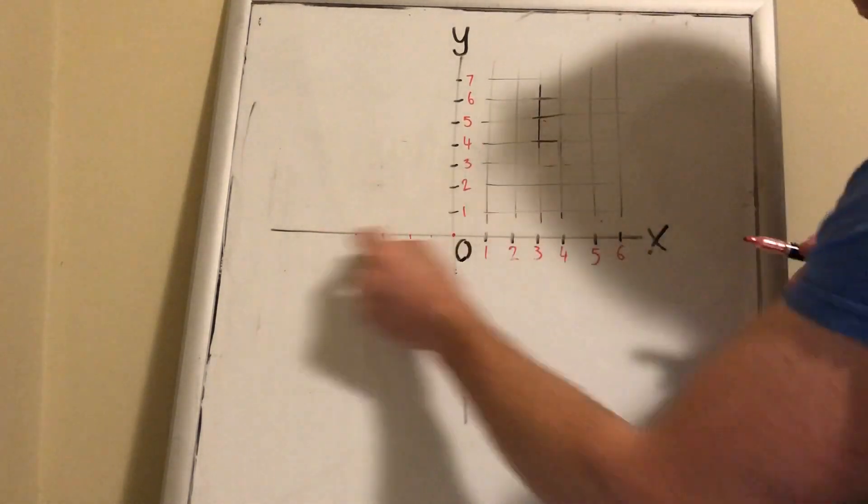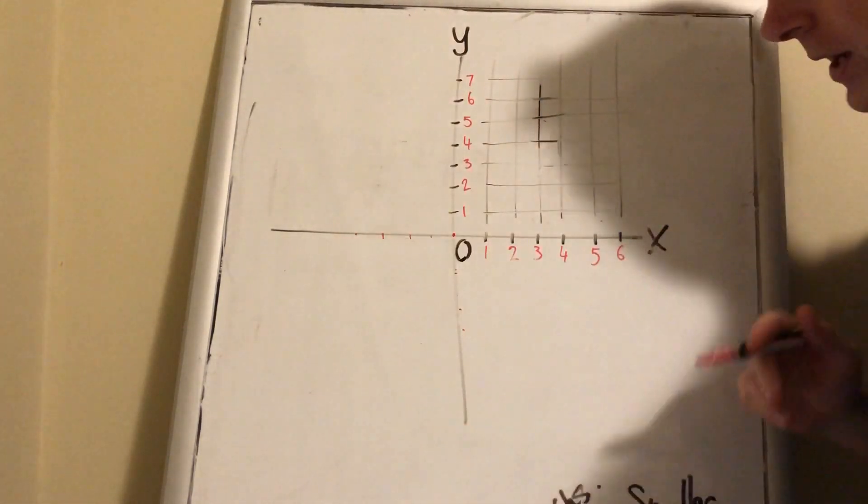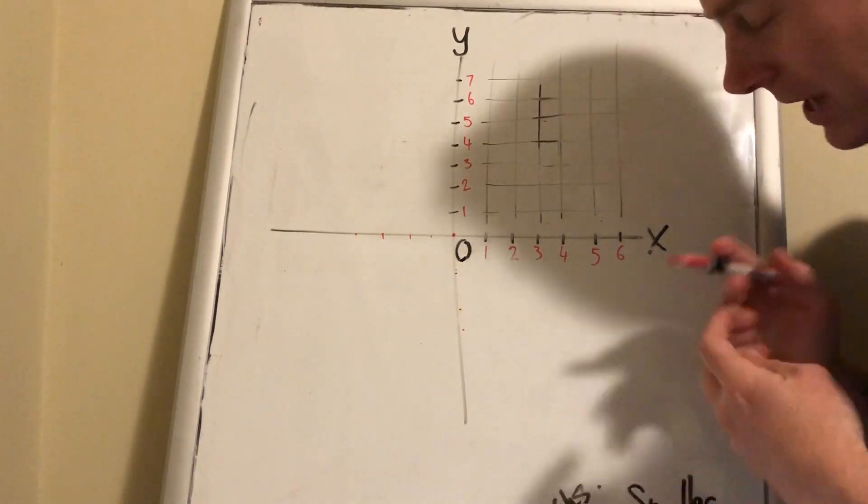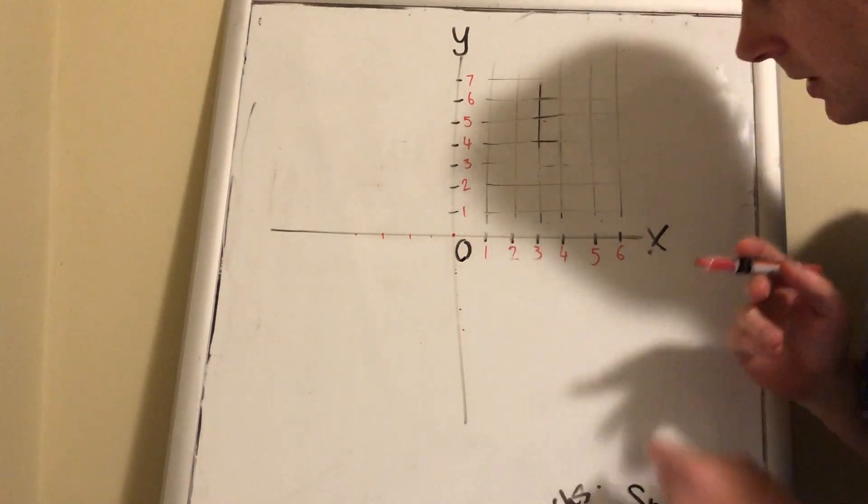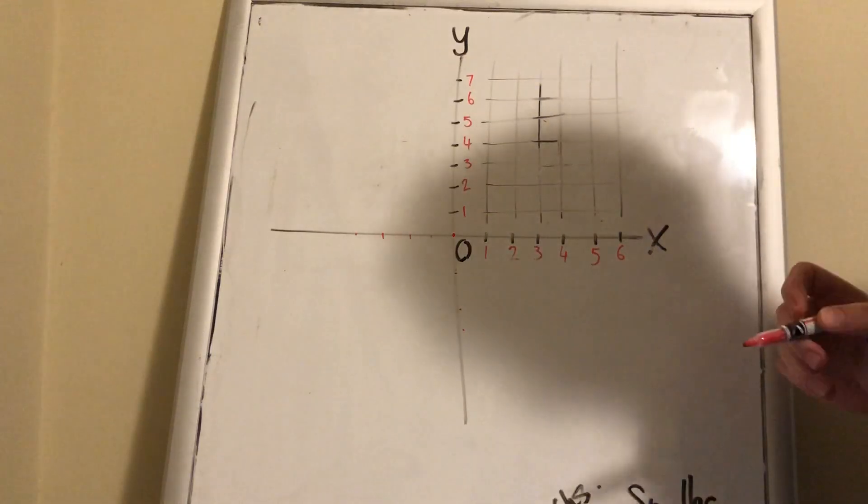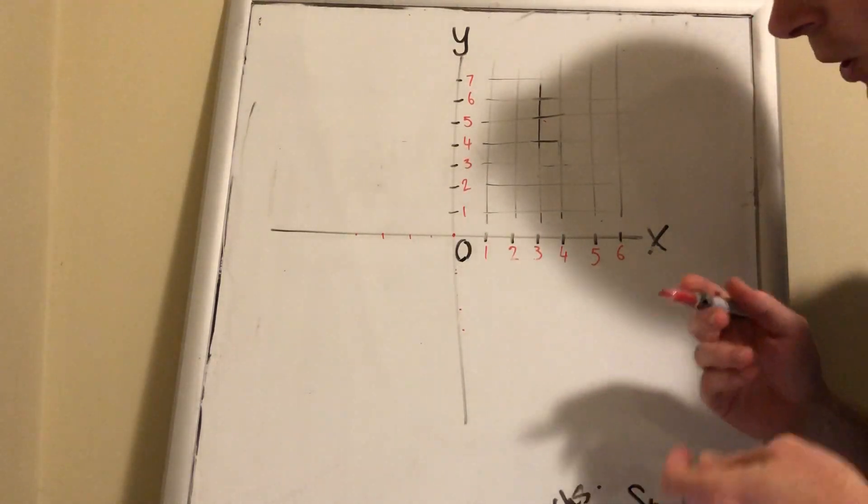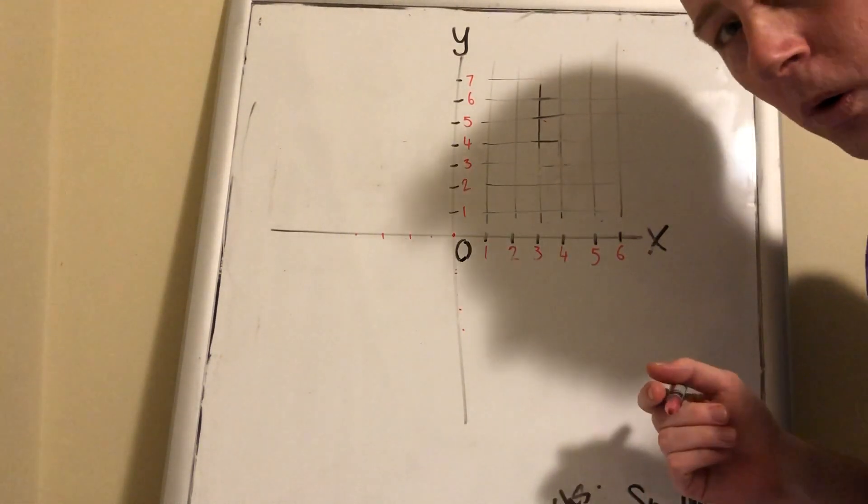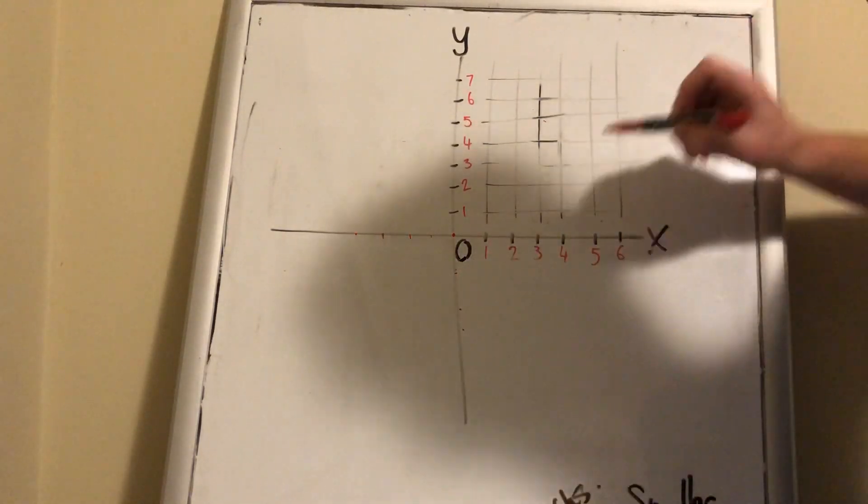We always say the x-axis first, then the y-axis. An easy way to remember that is x comes before y in the alphabet. For example, if I'm looking for location 3, 4, the x-axis first is 3.